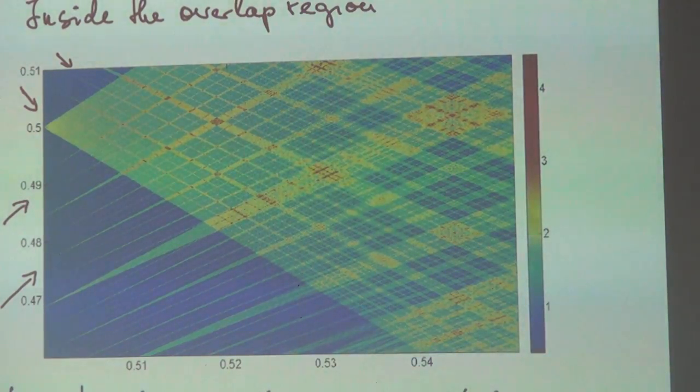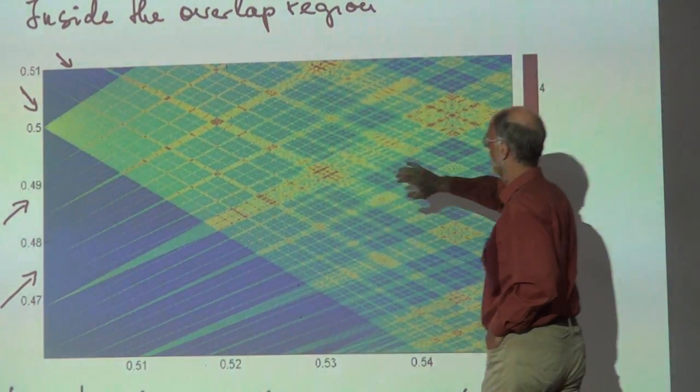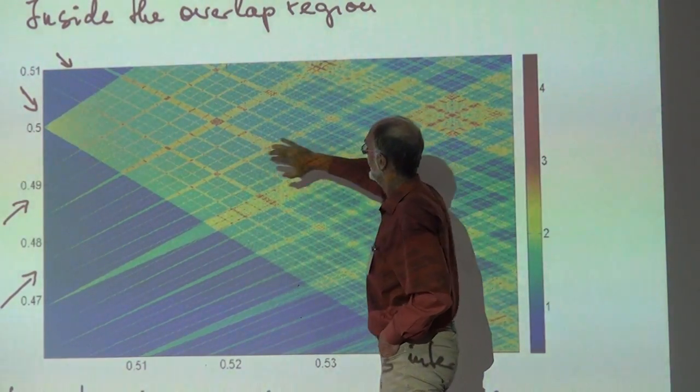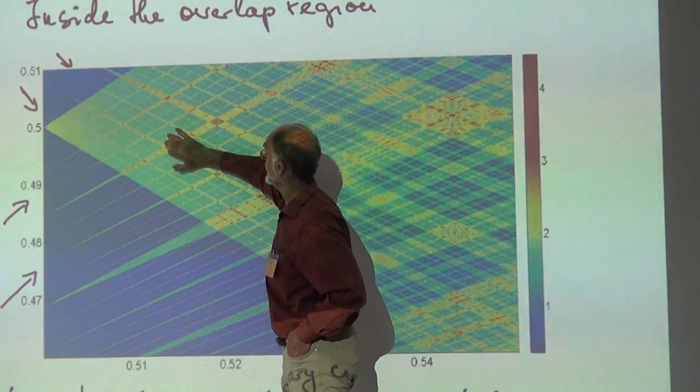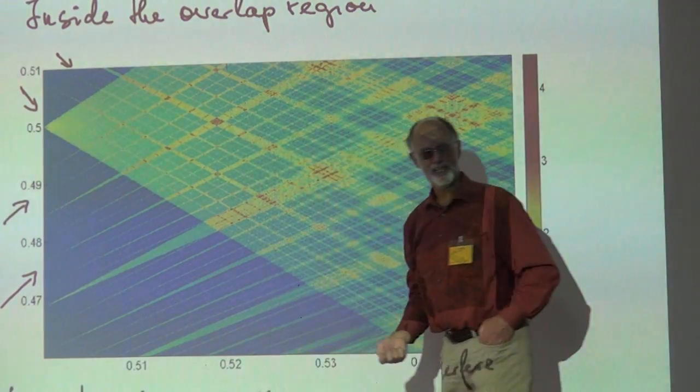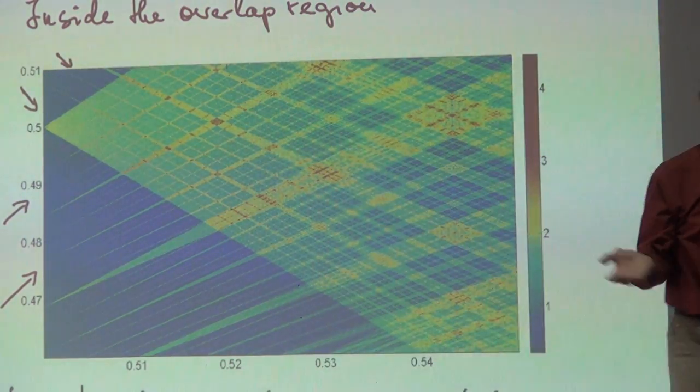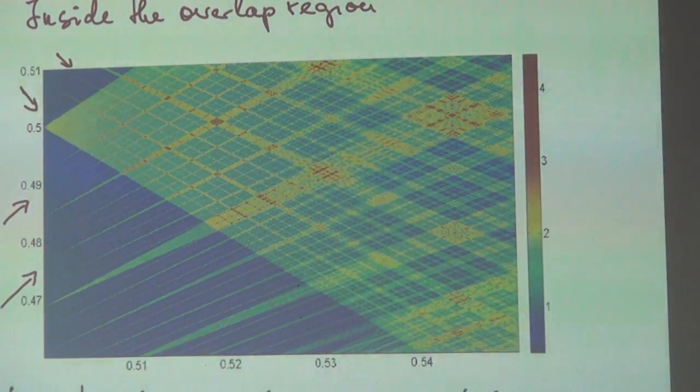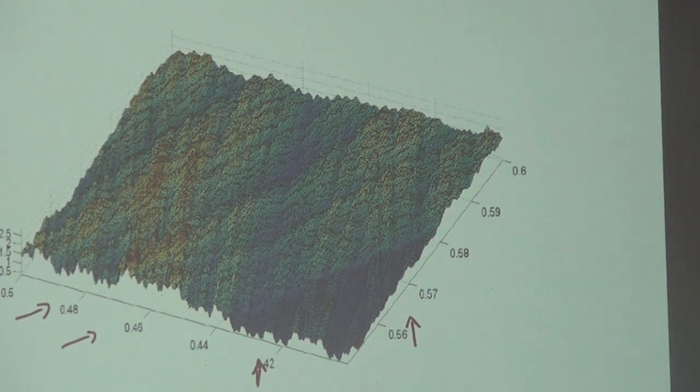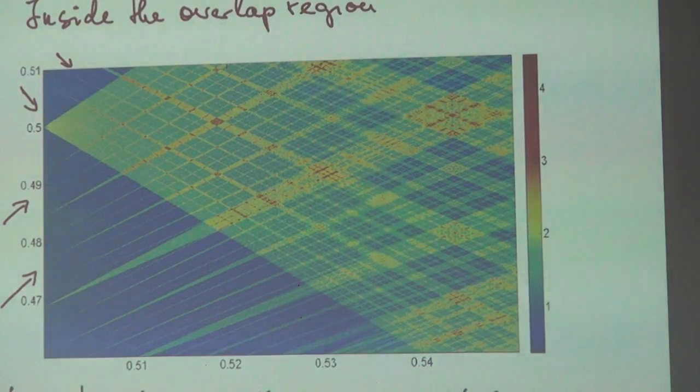So you have a number of Pisot numbers which are well known and which are also the accumulation points of Pisot numbers. And we have other Pisot numbers, accumulation points here where we have these side maxima. And these are all accumulation points of Pisot numbers and this is proved by the French school. You can see and this is another picture.